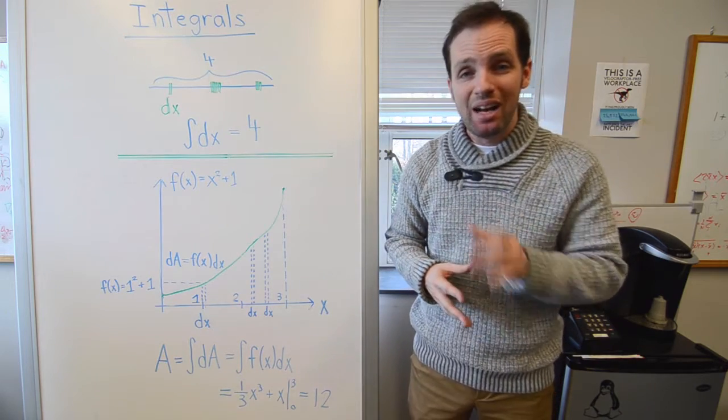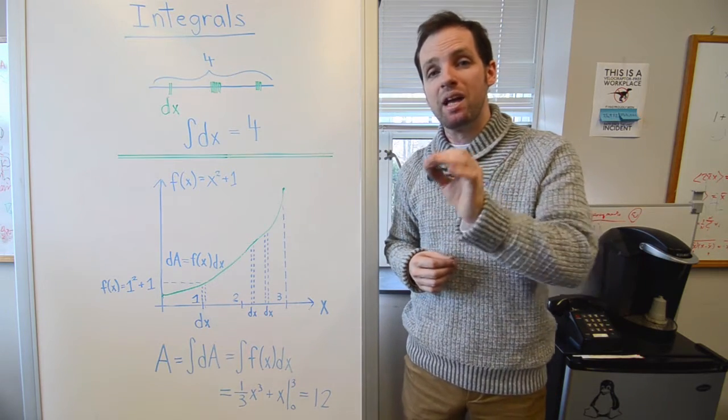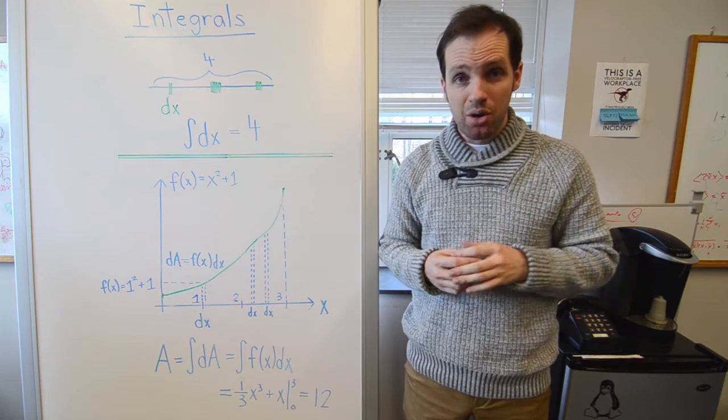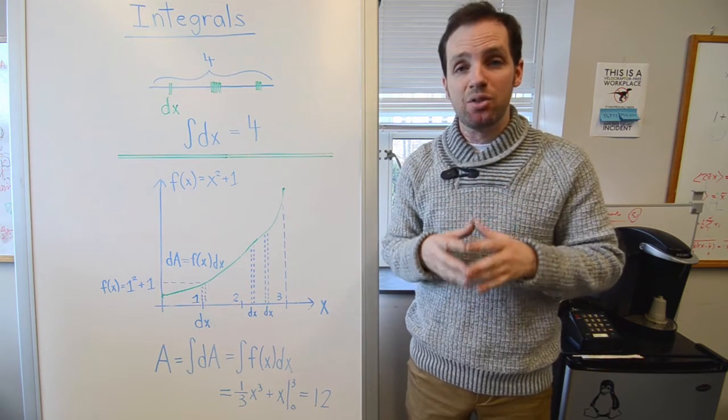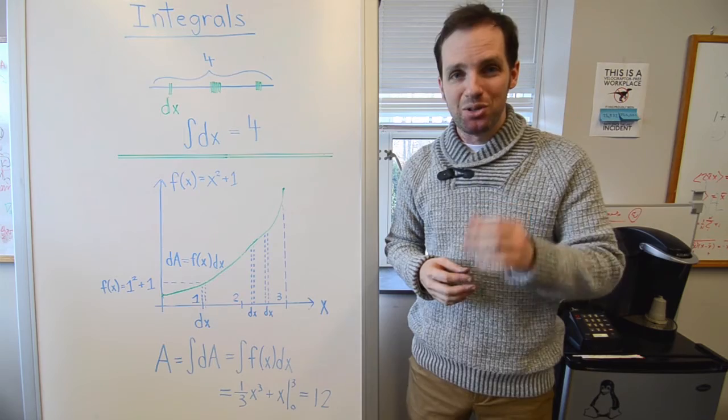Now for you completionists out there, that integral works out to be 1 third x cubed plus x, which, if evaluated between 3 and 0, gives you a value of 12.